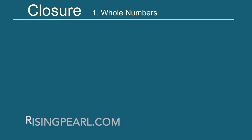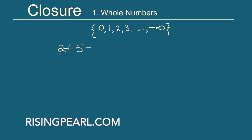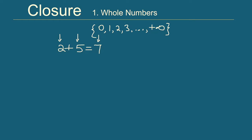Let's talk about the closure property for whole numbers. Whole numbers is simply a collection of numbers that start from 0 and go 0, 1, 2, 3, dot dot dot, all the way to plus infinity. Now let's talk about different operations. If we add any two whole numbers, say 2 and 5, we get 7. Or take 0 and 12 — we get 12. So we say that whole numbers are closed under addition.